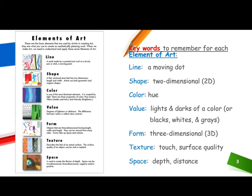Texture: describes the feel of an actual surface. The surface quality of an object can be real or implied. Space: is used to create the illusion of depth. Space can be two-dimensional, three-dimensional, negative, and/or positive.